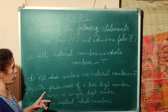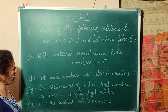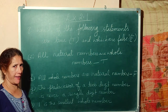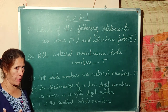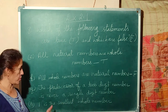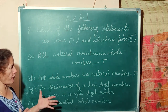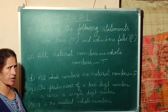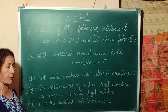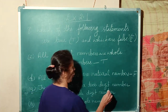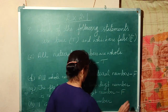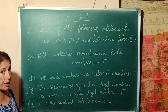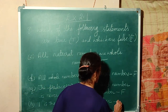The predecessor of a two-digit number is never a single-digit number — think of ten: 10 is a two-digit number, and its predecessor is 9, which is a single-digit number. So this statement is wrong — False. One is the smallest whole number — which is the smallest whole number? Zero. So this is also False.